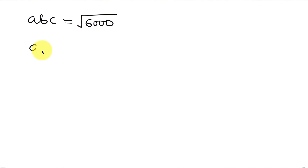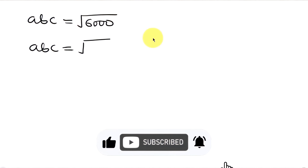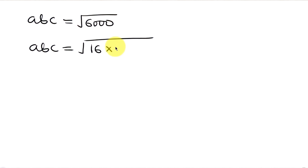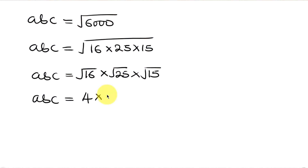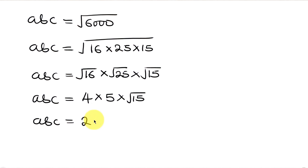So abc equals the square root of 6000, which we replace with the square root of 16 times 25 times 15. The square root of 16 is 4, the square root of 25 is 5, and the square root of 15 stays as root 15. Multiplying these together: 4 times 5 times root 15 gives 20 root 15. So abc equals 20 root 15.